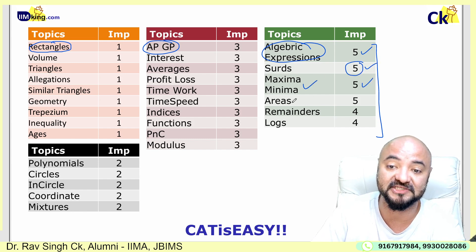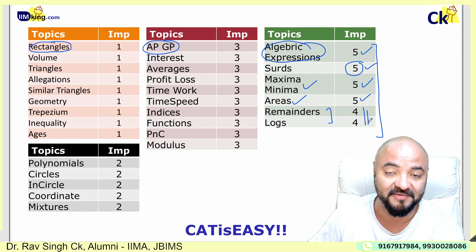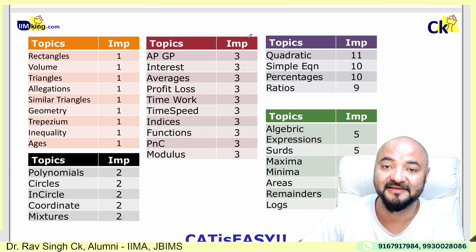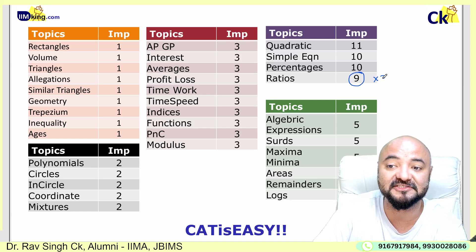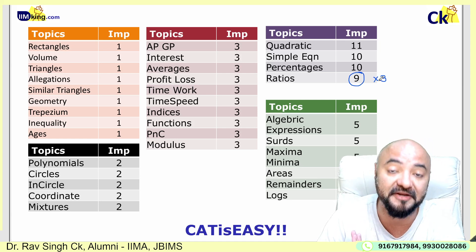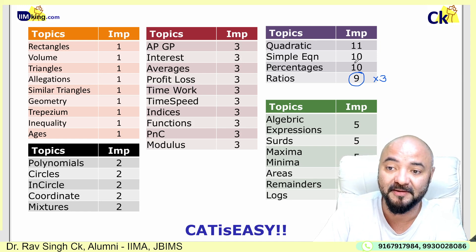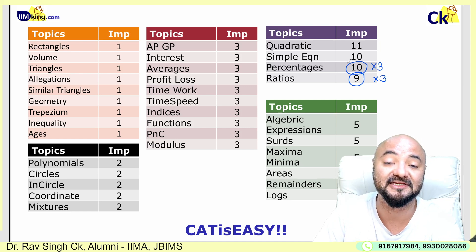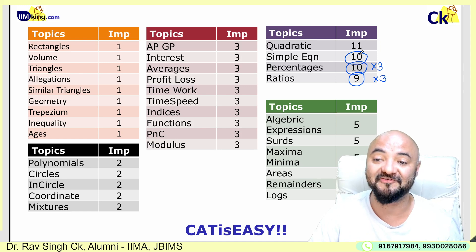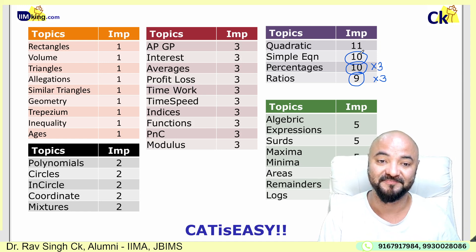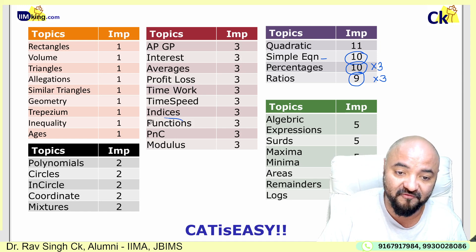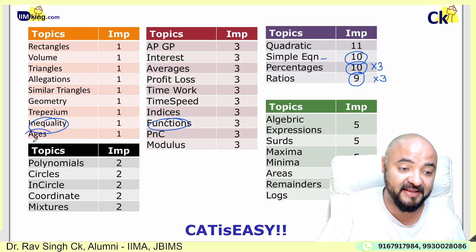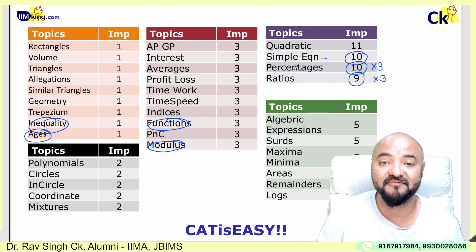Maximum-minima — five questions. Areas — five questions. Remainder and logs — four questions. Now we move to the most important part. Number four is ratios — there were nine questions on average, three questions per slot based on ratios. Percentages — 10 questions on average. Simple equations — 10 questions. There was a question where simple interest was combined with function graphs, combined with inequality, combined with modulus — multiple concepts in one question.